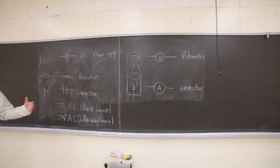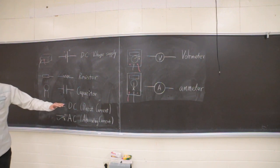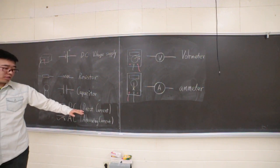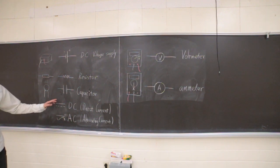And we have two types of signals, DC and AC. DC stands for direct current. AC stands for alternating current. The DC will look like this. AC will look like that.